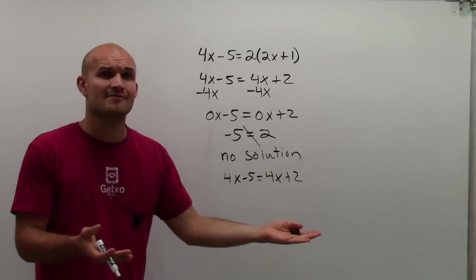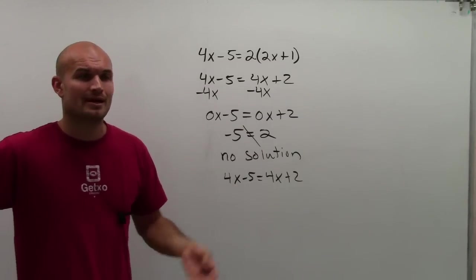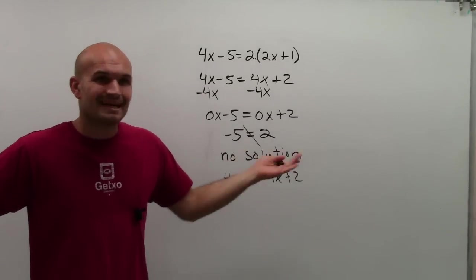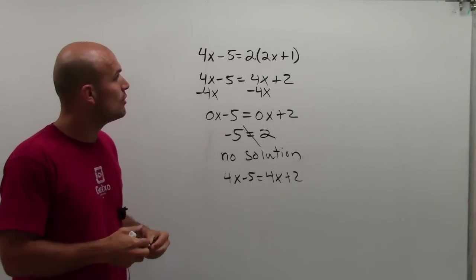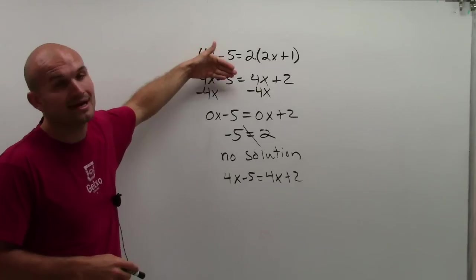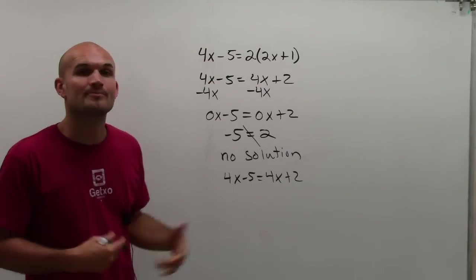Well, of course, if you're minusing 5 and then you're adding 2 and you're multiplying both of them by 4, it's not going to be the same number. So therefore, there's no solution. There's no possible number that you can apply for x that's going to make this equation true. There you go.